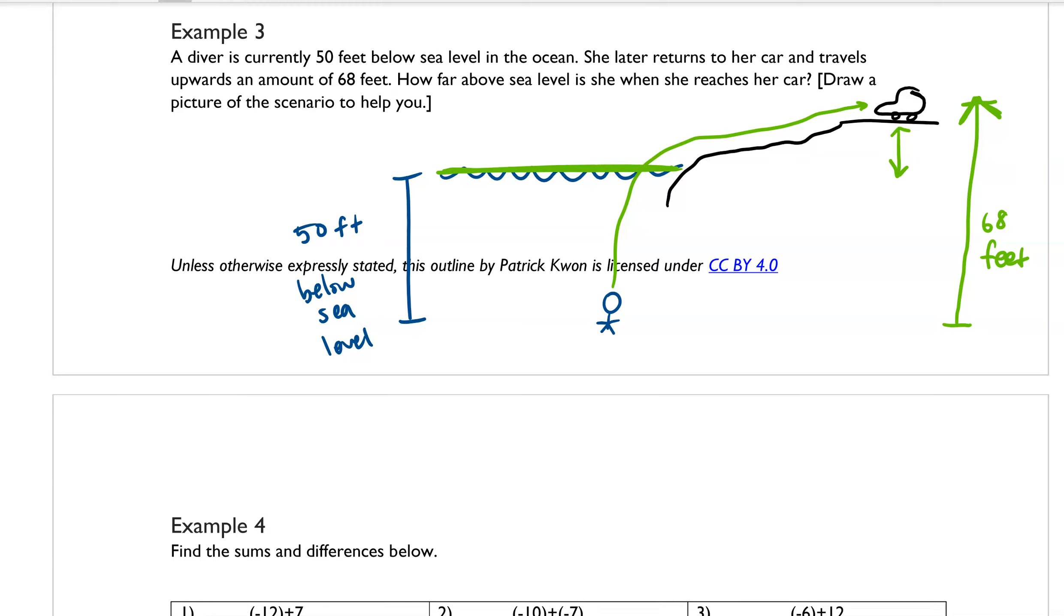So there's a couple ways we can think about it. Basically, the diver is starting off at a depth of negative 50 feet. And then because we're going upwards 68 feet, we're basically trying to solve the expression negative 50 plus 68.